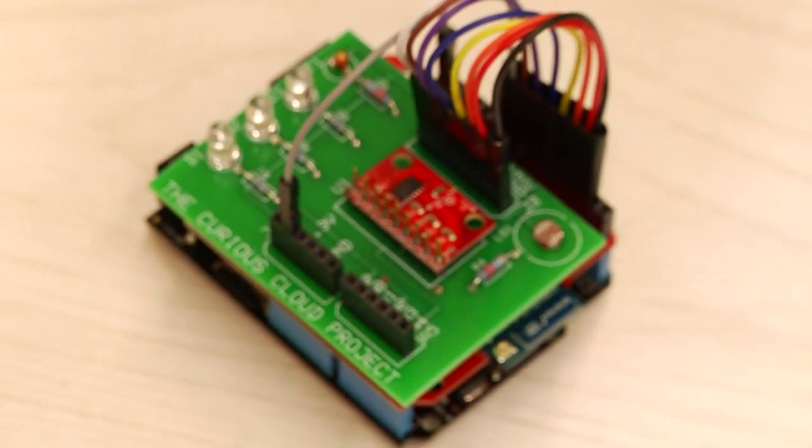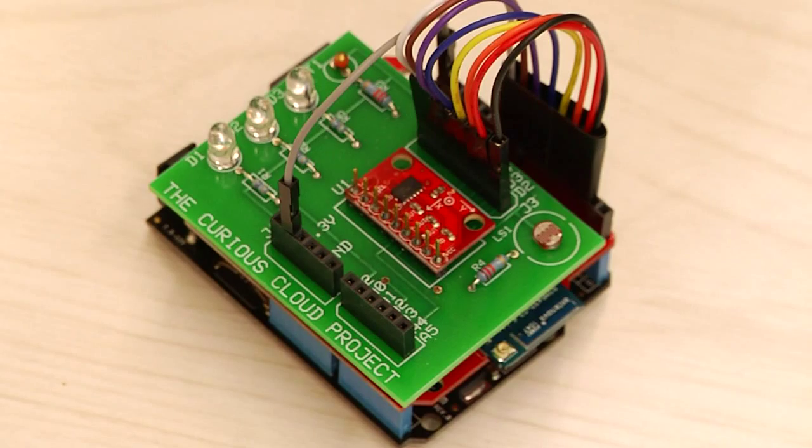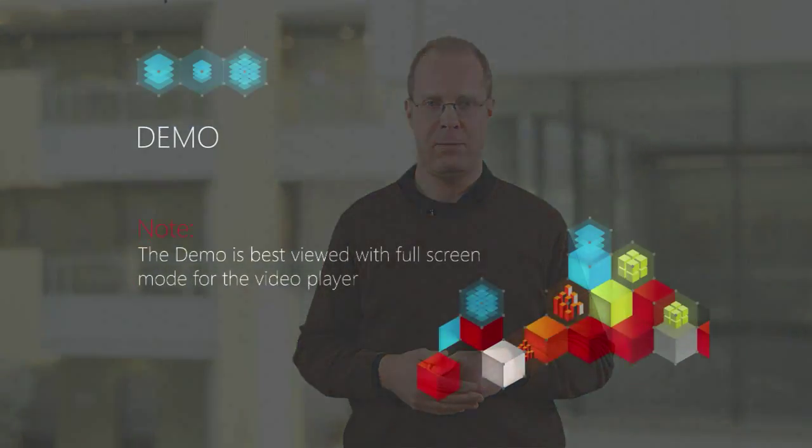Let's look at a demo to illustrate these capabilities and introduce an Internet of Things scenario, which is a very prominent use case for Stream Insight. The demo uses a small device that can connect to the Internet and carries several sensors — most prominently a motion sensor, a temperature sensor, and a light sensor — whose data we'll use for the Internet of Things demo with Stream Insight.